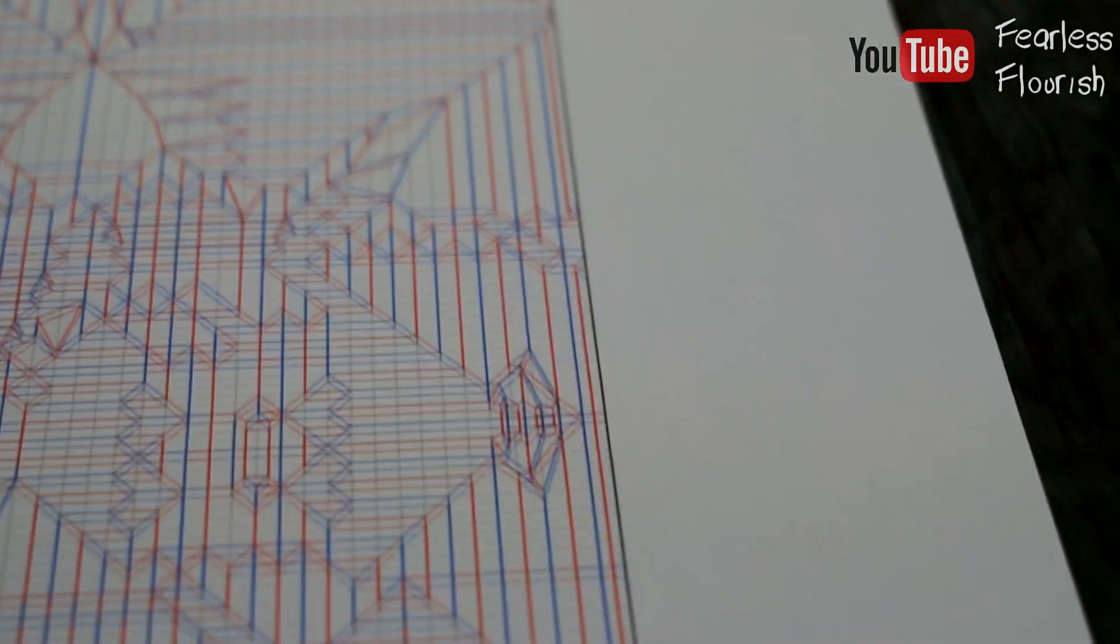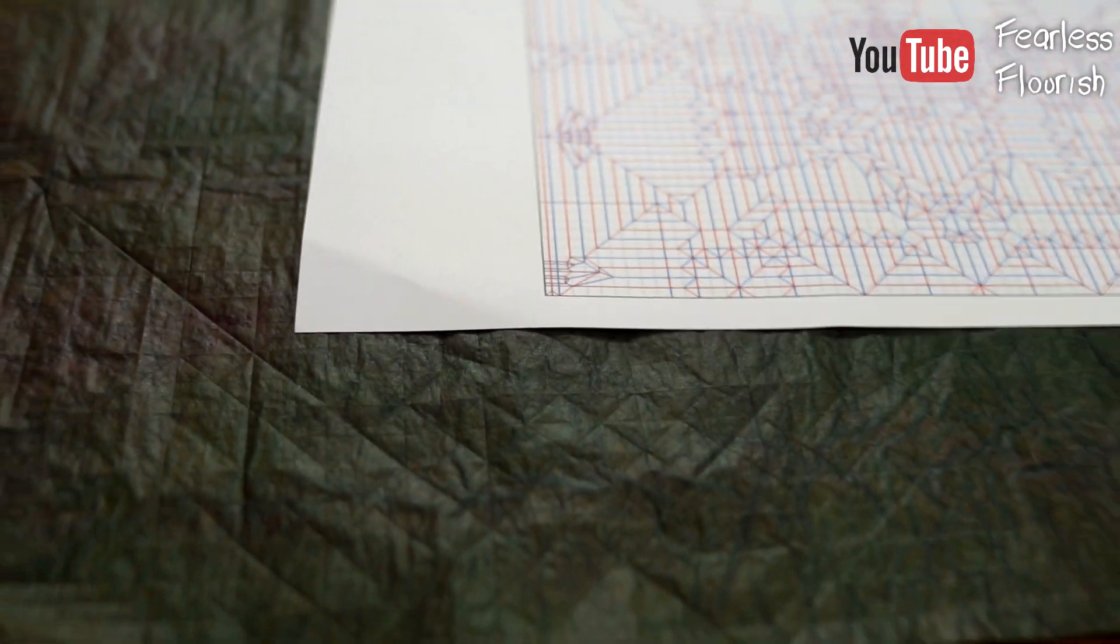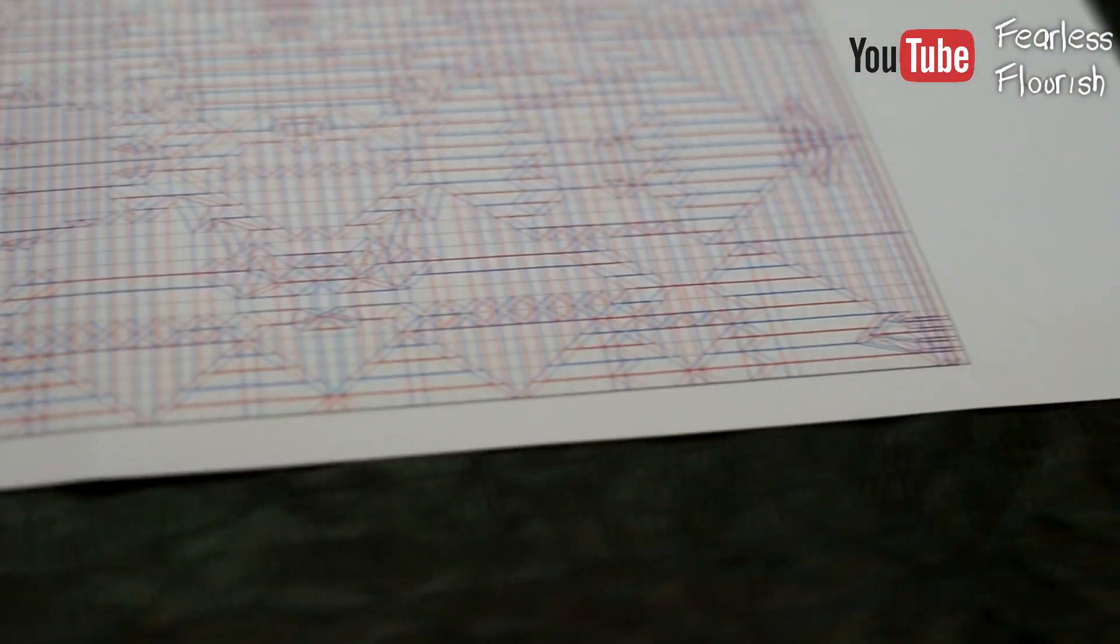So that means that once I do this, every single crease will be absolutely perfect. Solid mountain folds on the color side. Solid mountain folds on the white side, i.e. valley folds. And then when I come to collapse this, it will be much easier.